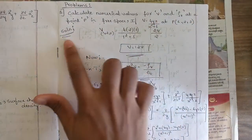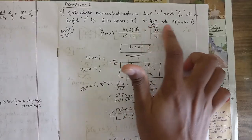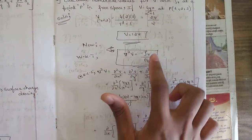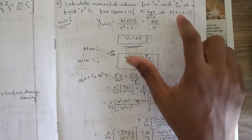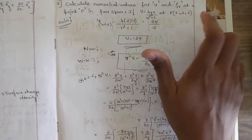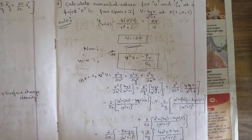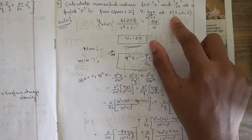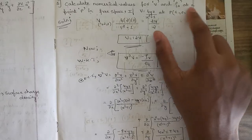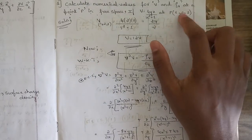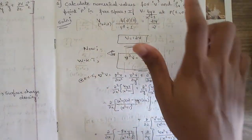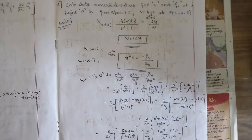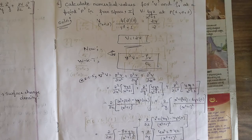They might also ask to calculate numerical values of V and ρv at a point P in free space if the value of V is given at P(1, 2, 3). Using Poisson's equation del²V = −ρv/ε, and by seeing the coordinates (1, 2, 3 with no angles mentioned), we recognize this is a rectangular coordinate system. Substitute del²V in rectangular coordinates and solve accordingly.